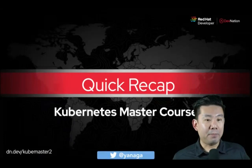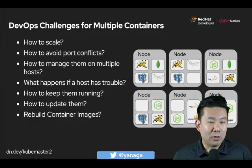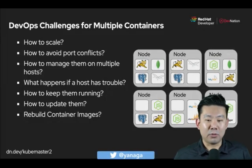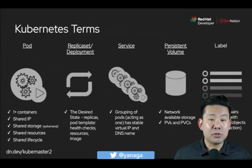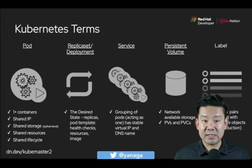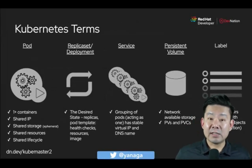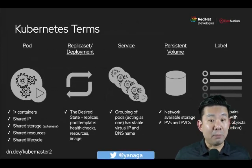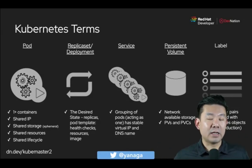A quick recap of what we covered in the previous session: We discussed DevOps challenges for running multiple containers — how to scale, avoid port conflicts, and what happens when a node goes down. We also learned Kubernetes terms like pods, replica sets, deployments, services, and persistent volumes for stateful applications. And how to organize resources using labels to apply and filter commands.